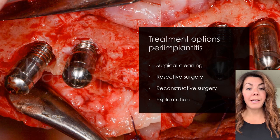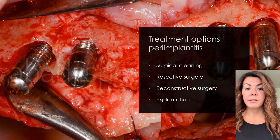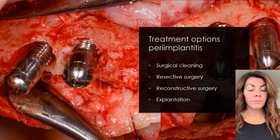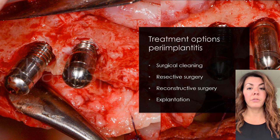The first one is surgical cleaning. With this, I mean that you do a flap, you do a cleaning around the implant, you remove calculus and granulation tissue, and then you place your flap back. According to the literature, there is a chance that you might have bone fill after this type of treatment, even though you haven't placed any biomaterial in the crater defect.